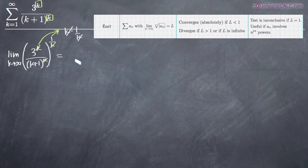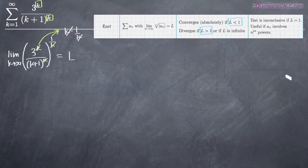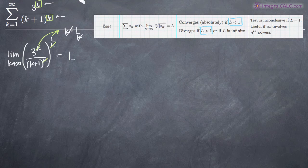When we simplify, we're going to get some number — we'll call it L. What the root test tells us is that if L is less than 1, then the series converges absolutely. If L is greater than 1, then the series diverges. And if L is equal to 1, then the root test is inconclusive and we'll have to use another test. All you're looking for is that each term in your original series is raised to the power of k or whatever variable you're working with.